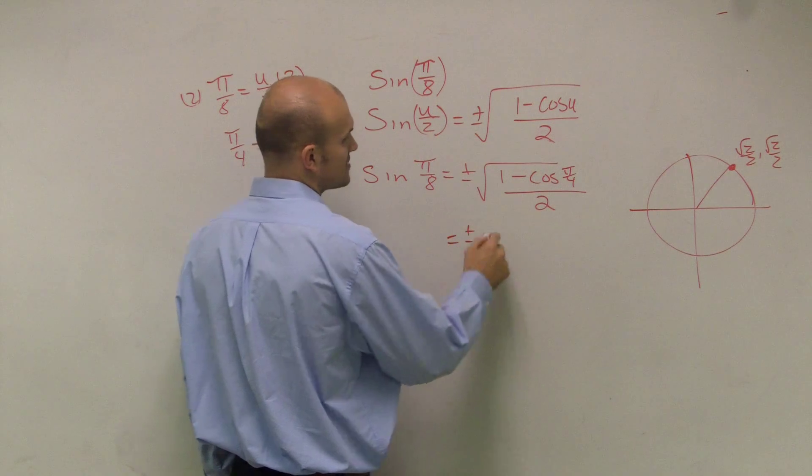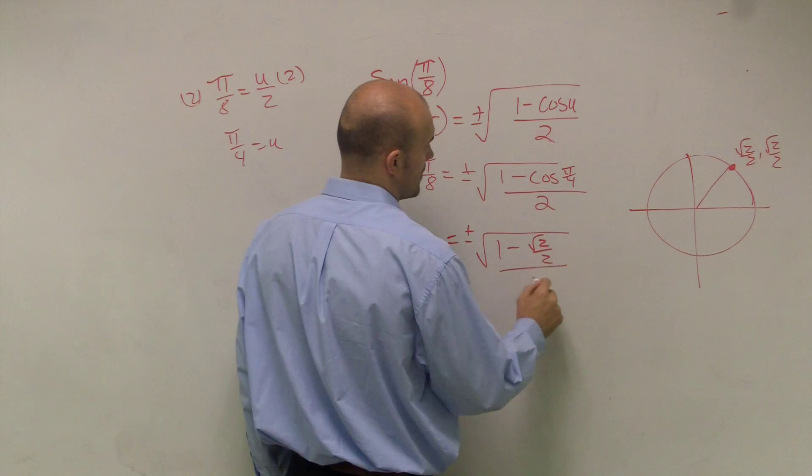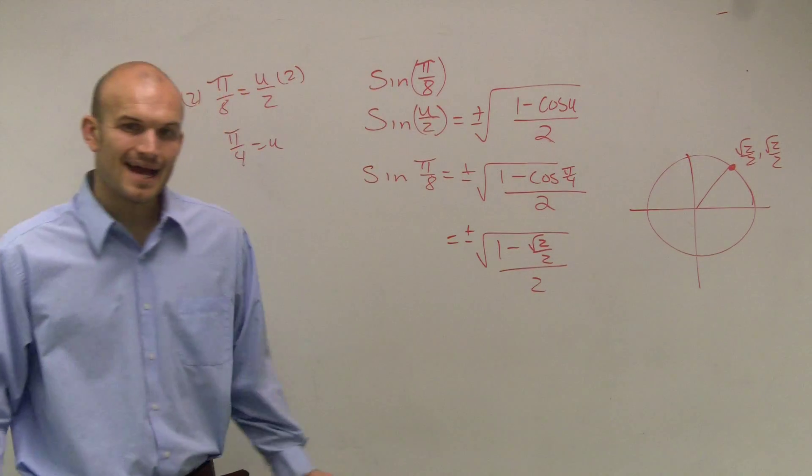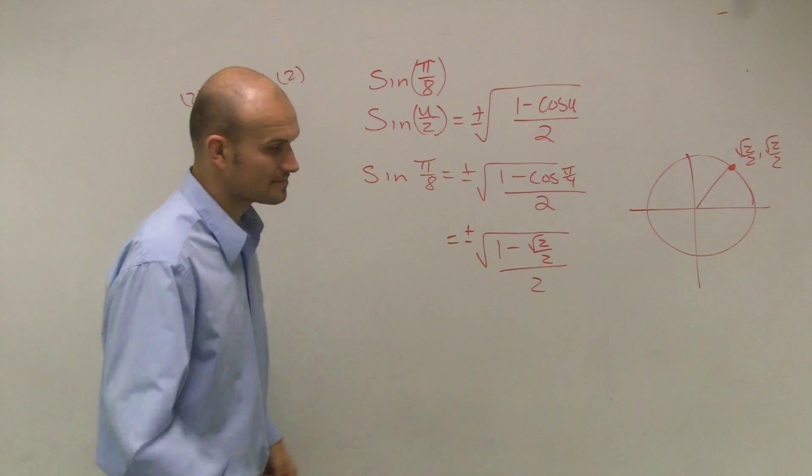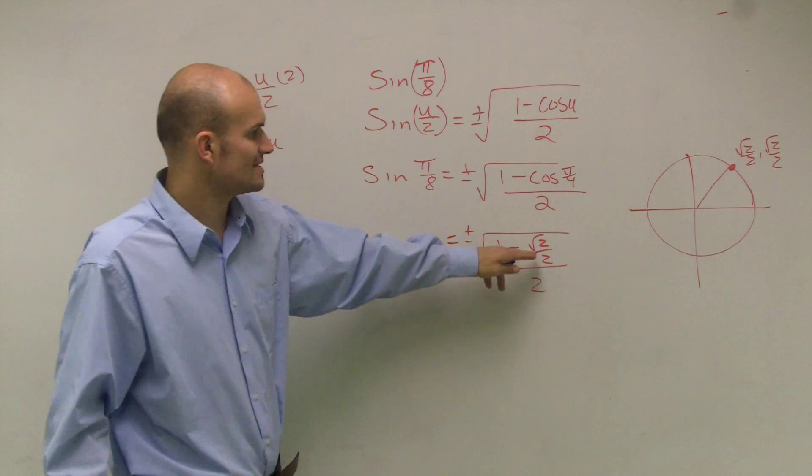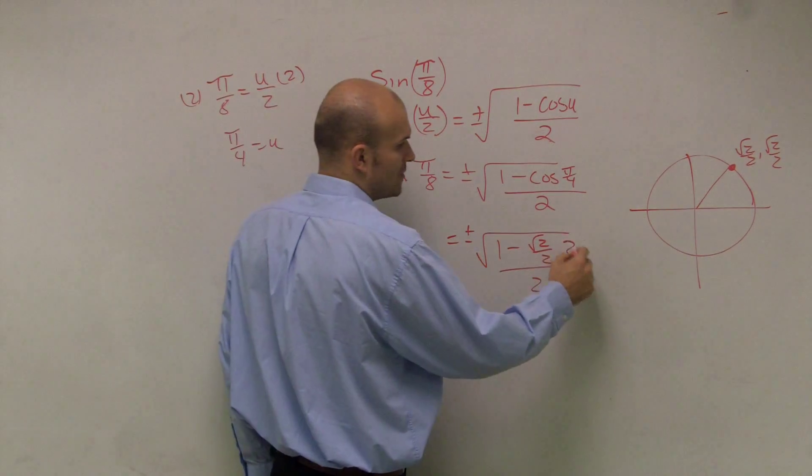So let's rewrite this: plus or minus radical 1 minus radical 2 over 2 all divided by 2. Now, to simplify this, what I'm going to do is get rid of this fraction, this square root of 2 over 2. So to do that, I can multiply by 2.